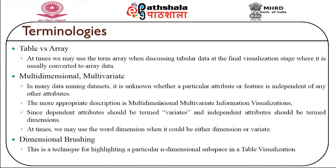Some terminologies associated with tabular data visualizations: table versus array — we may use the term array when discussing tabular data at the final visualization stage where it is usually converted to array data. Multidimensional and multivariate dataset — in many data mining datasets it is unknown whether a particular attribute is independent of any other. The more appropriate description is multidimensional multivariate information visualization, since dependent attributes should be termed variates and independent attributes as dimensions.